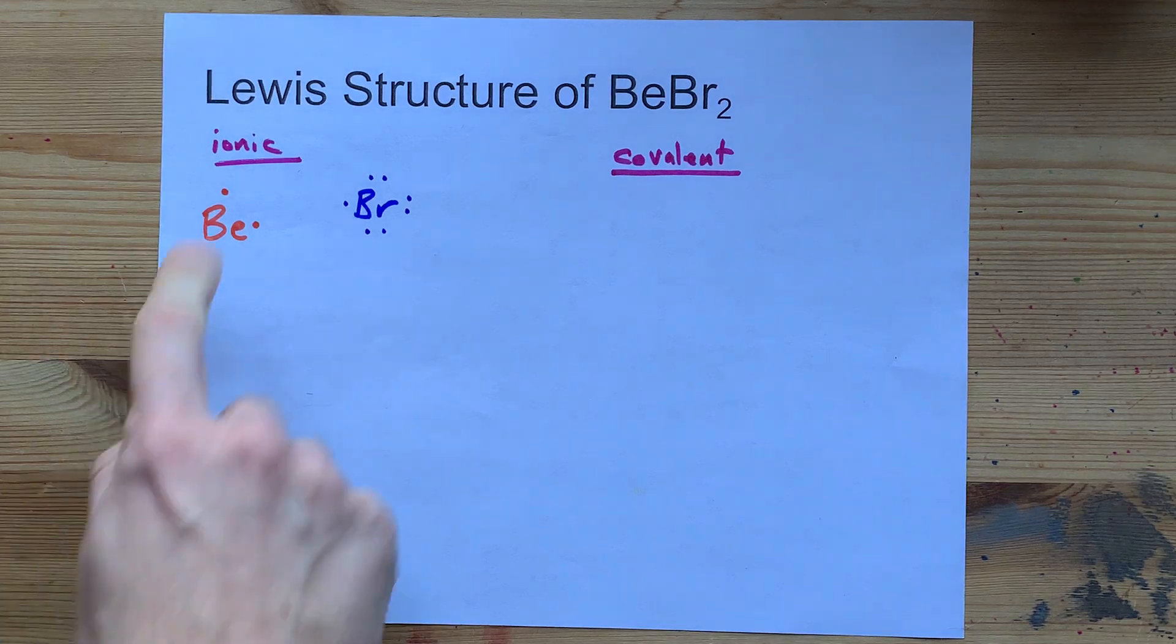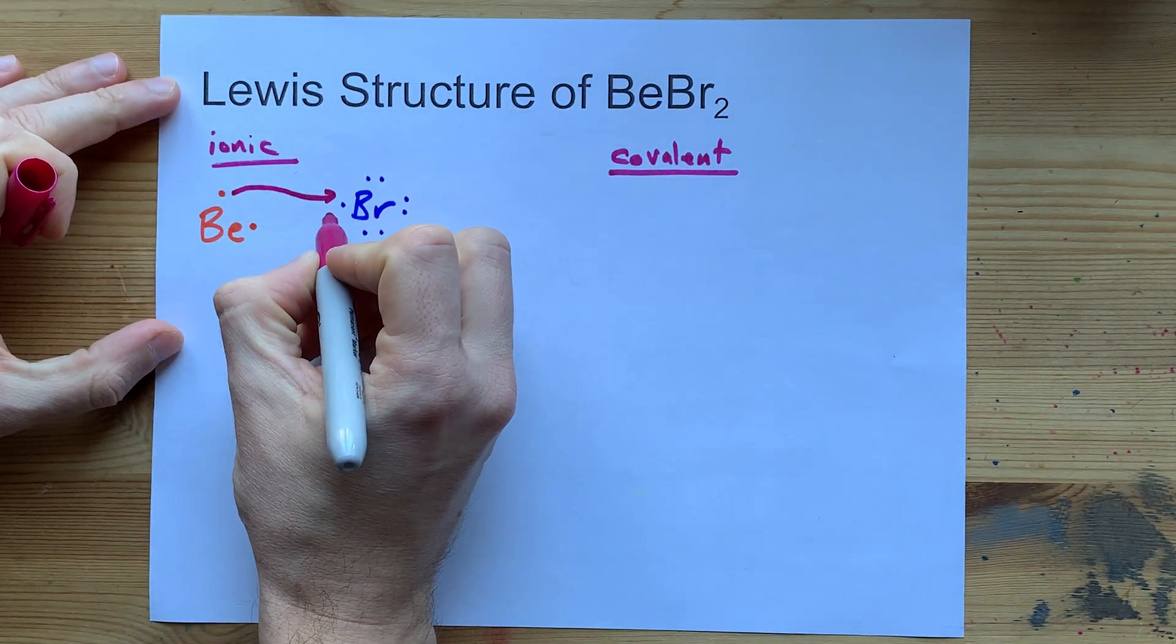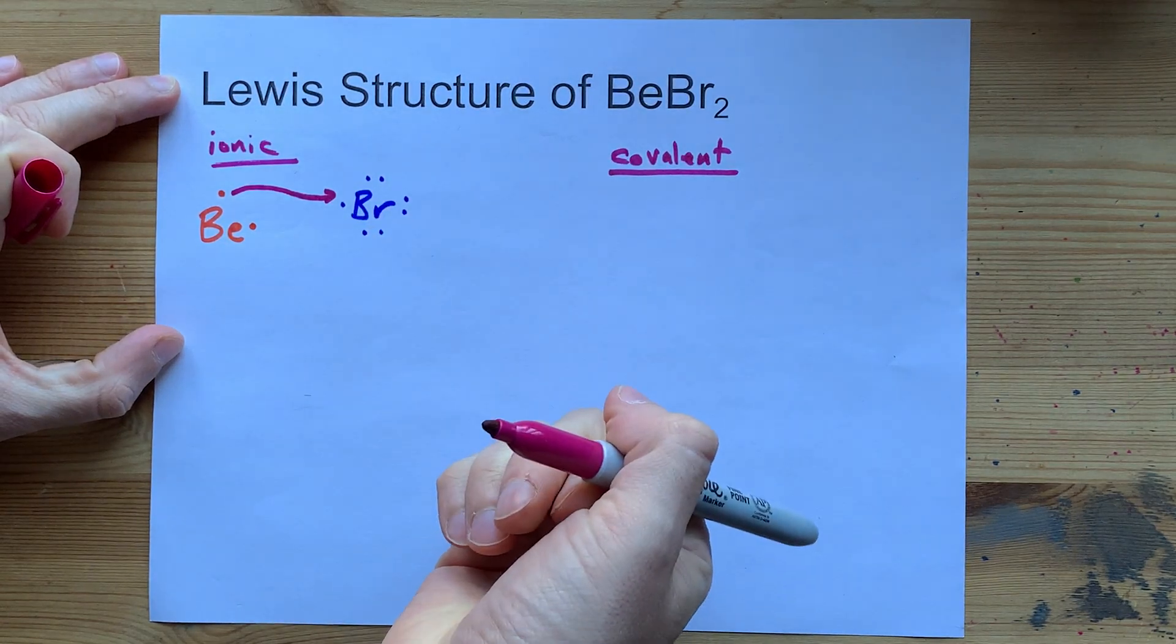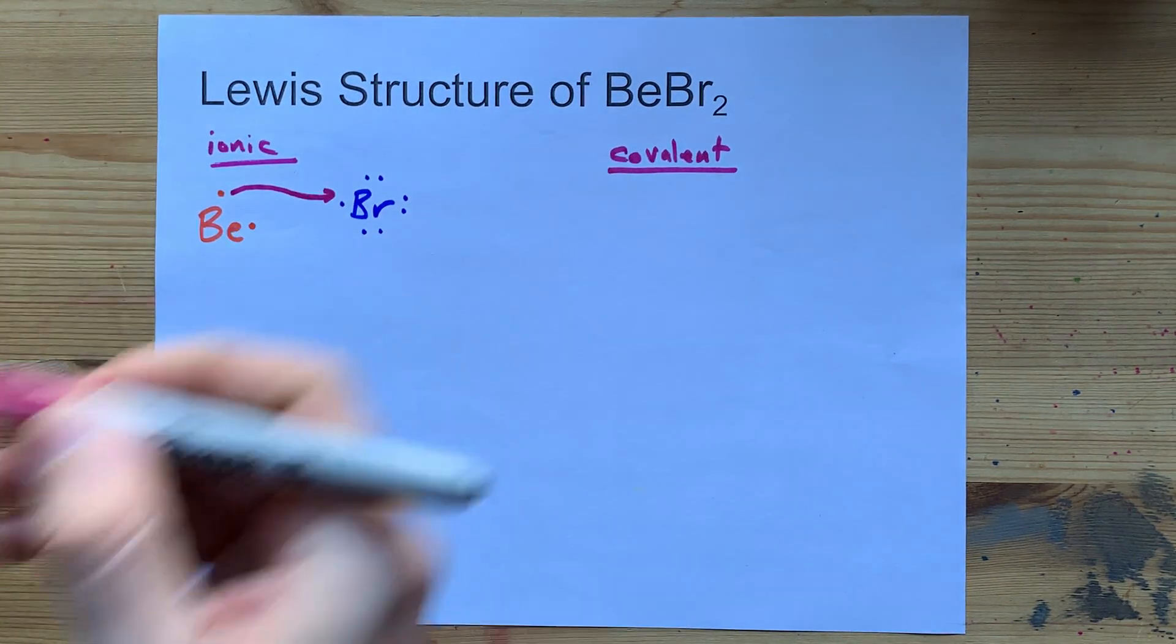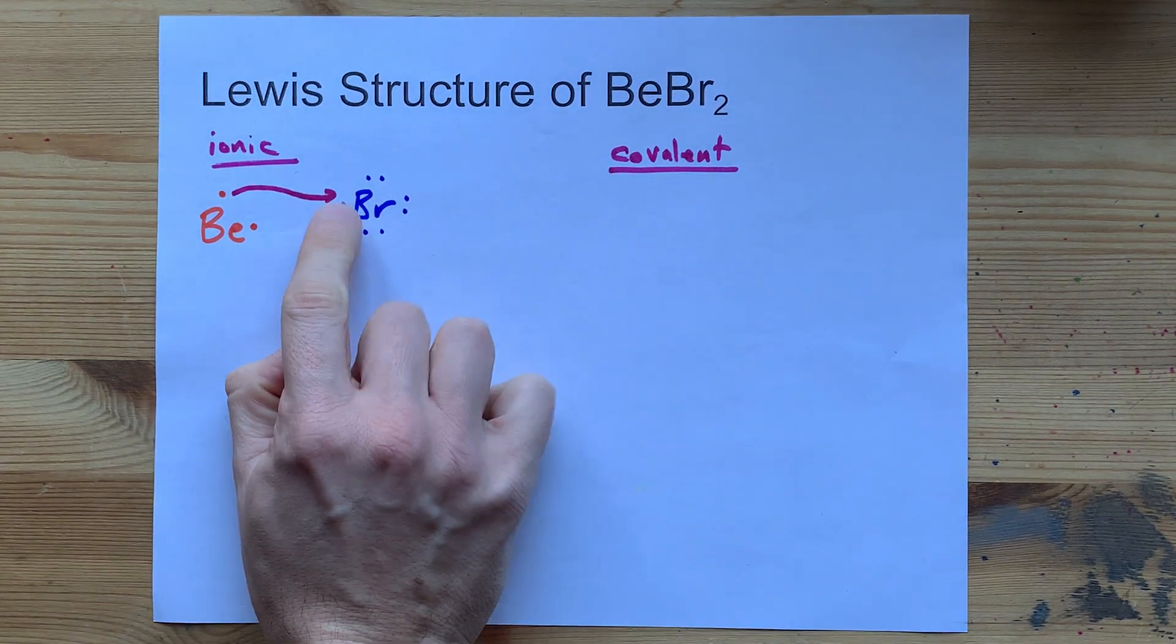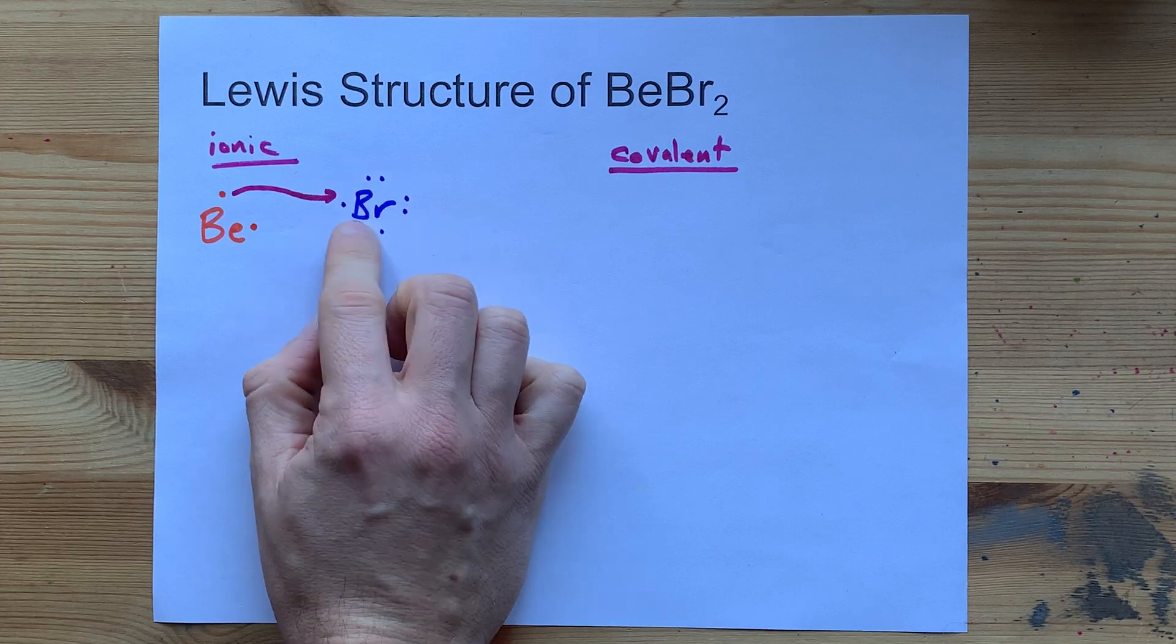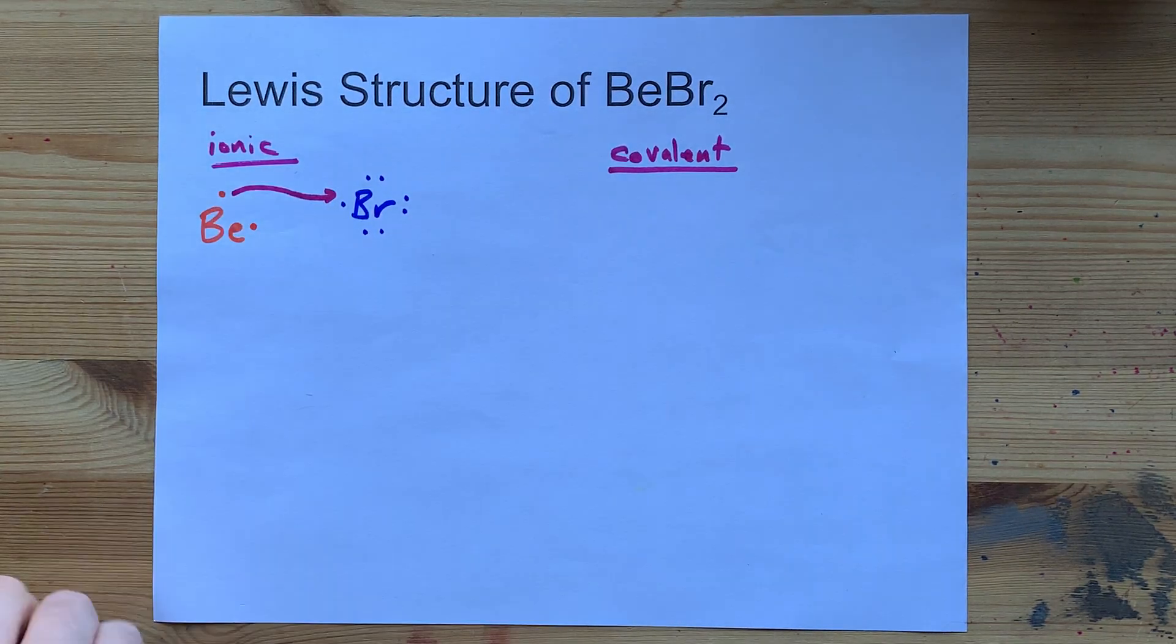So this beryllium might give away one electron to bromine. Bromine has a higher electronegativity anyways. But that beryllium still has one extra valence electron, and this bromine now has a full eight. One, two, three, four, five, six, seven that it brought, plus one from the bromine. Or from the beryllium.